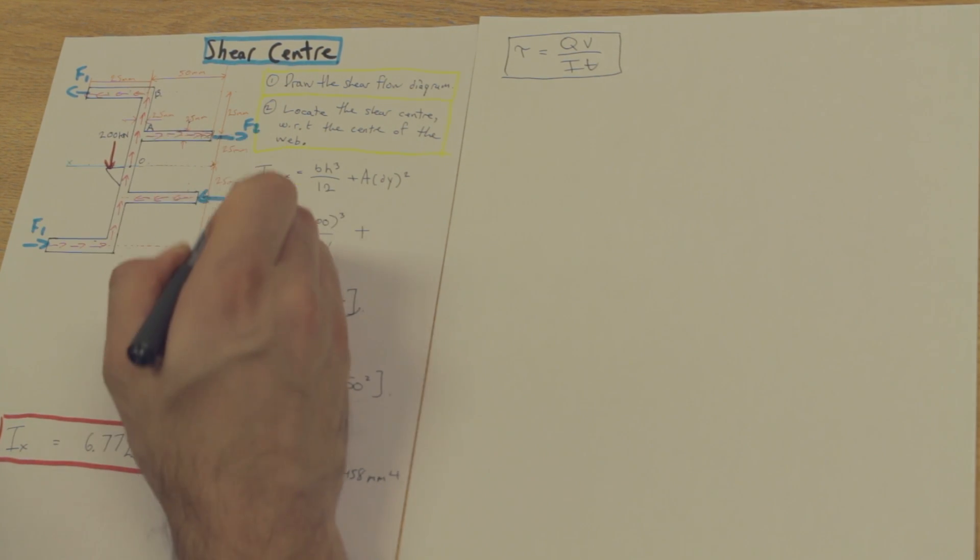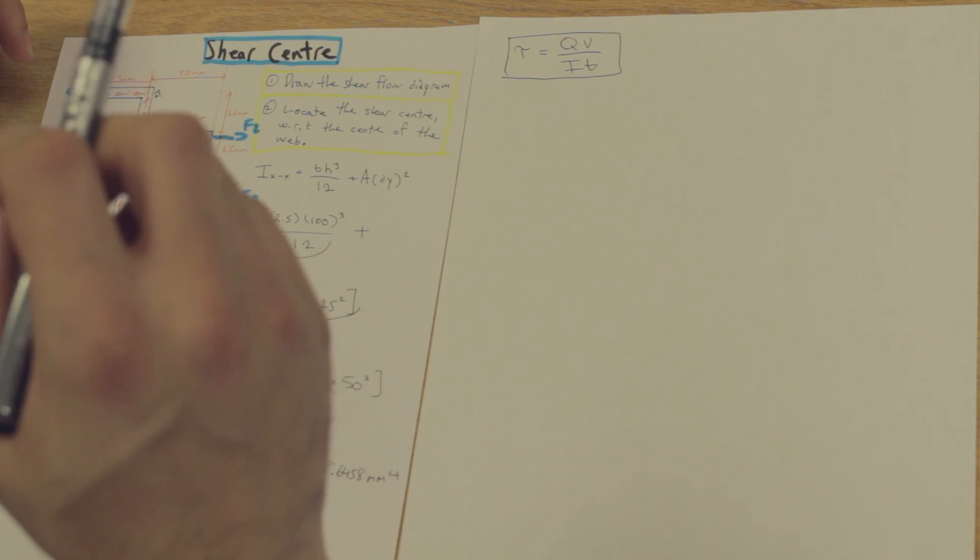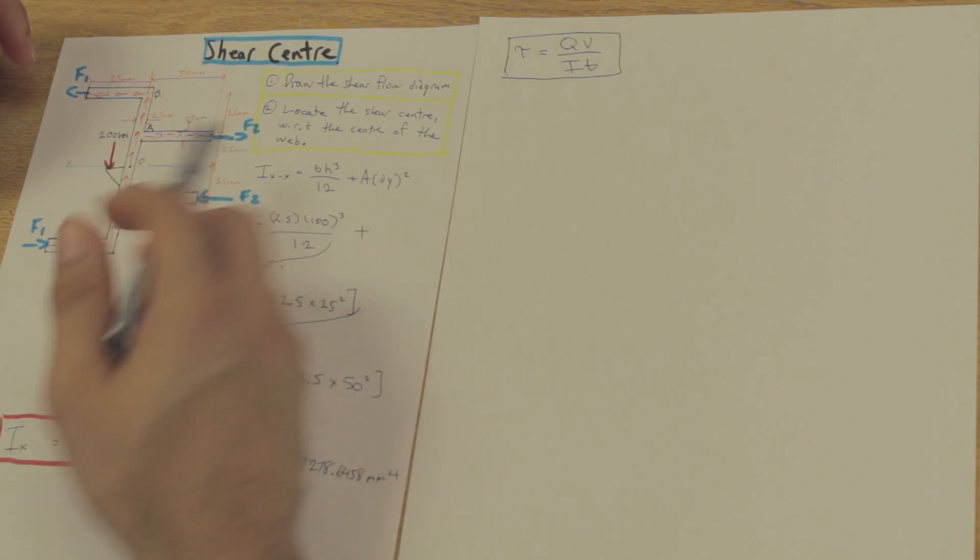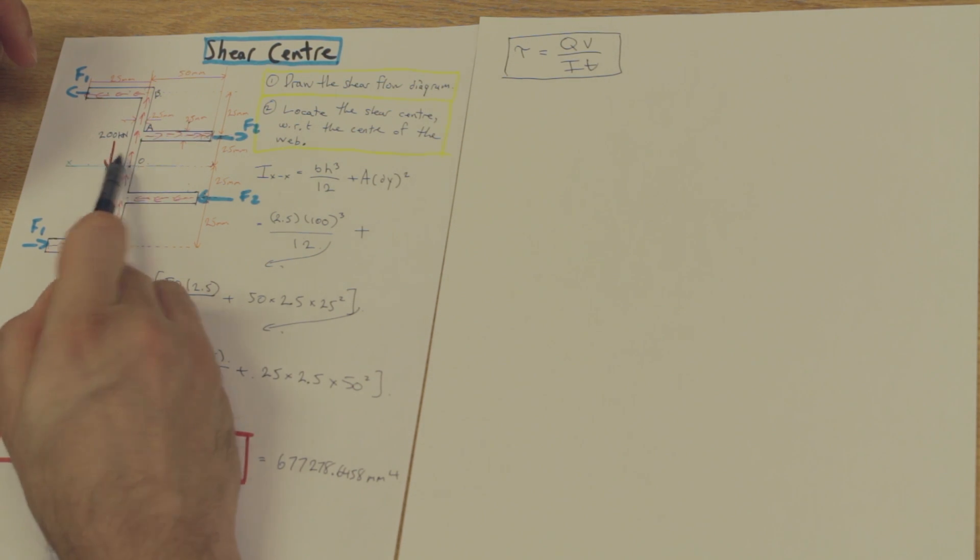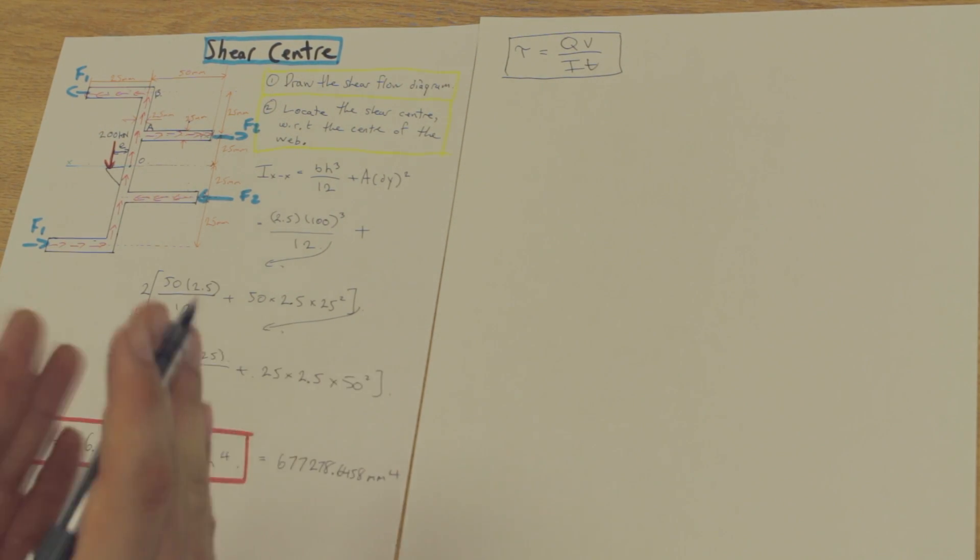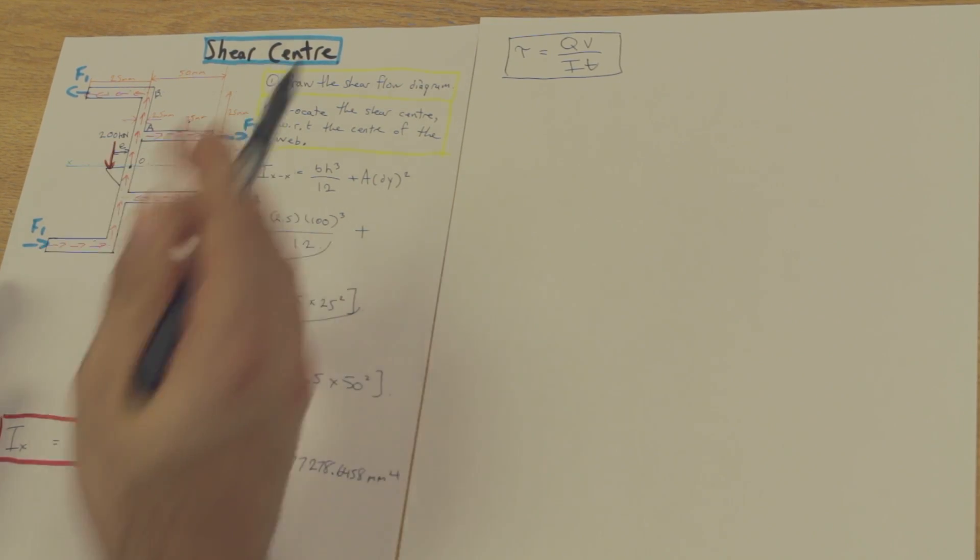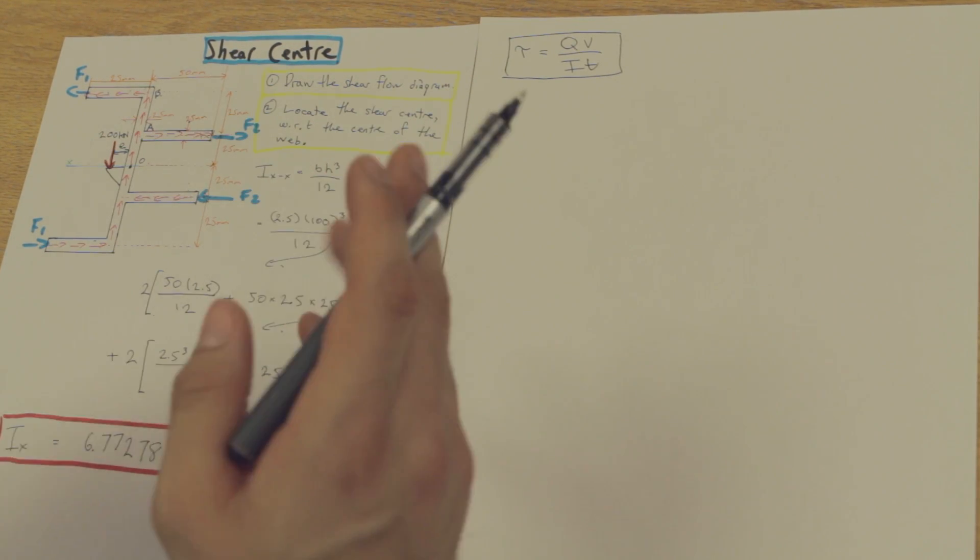Once we have that, we can solve for F1 and F2. Once we solve for F1 and F2, we can then use the summation of the moments to solve for our shear center, which is going to be E. It's going to be the spacing from the point of origin here to the force. What spacing ensures that there's no rotation, essentially.